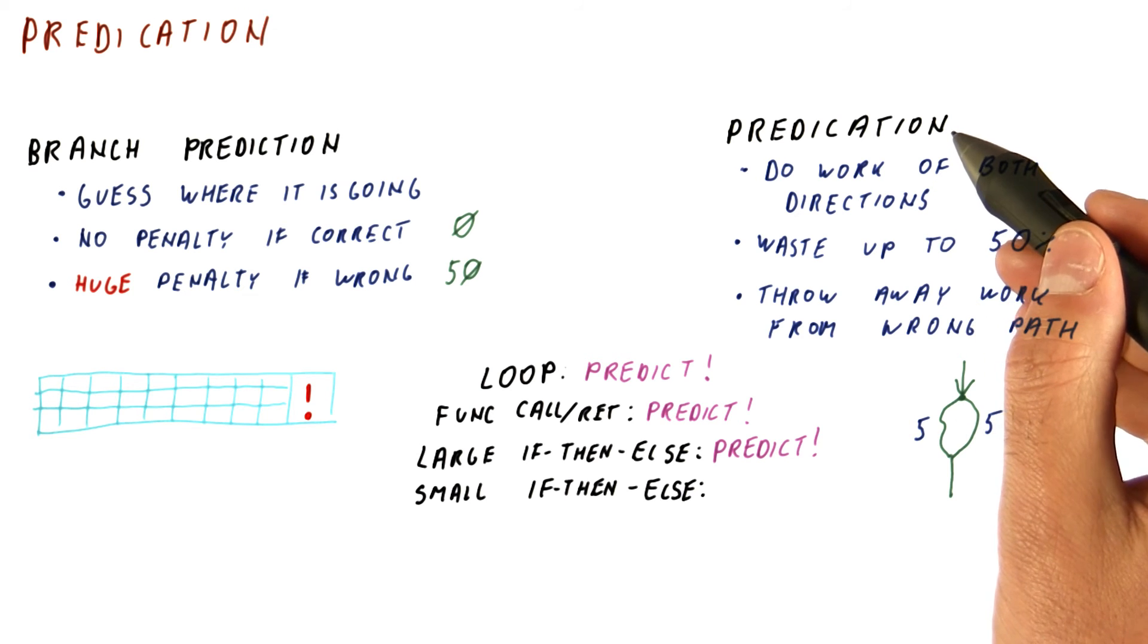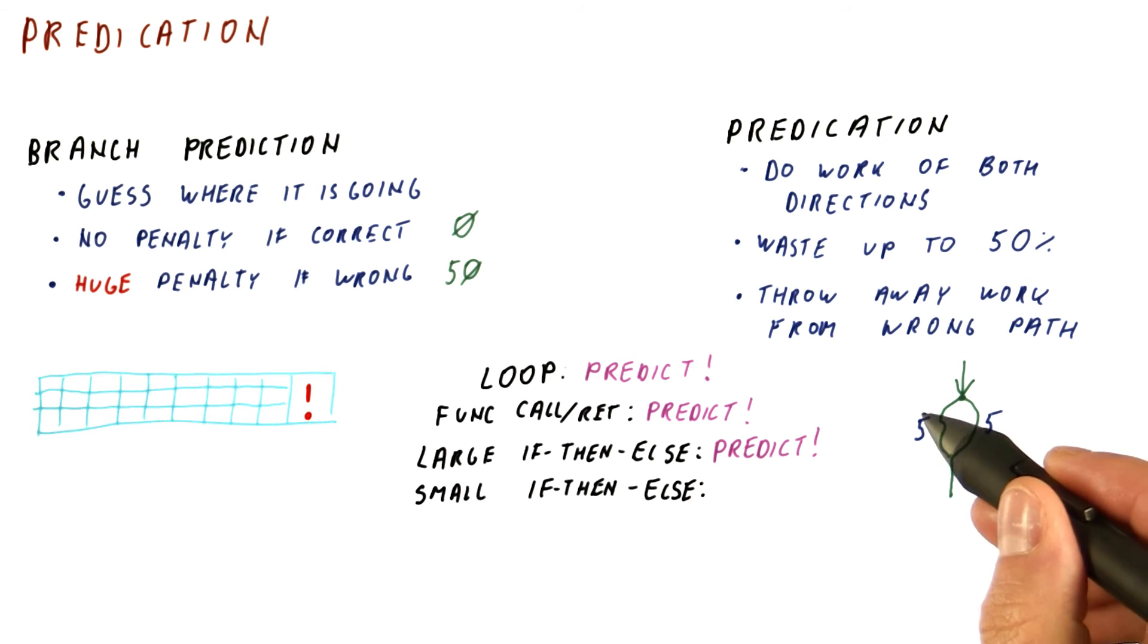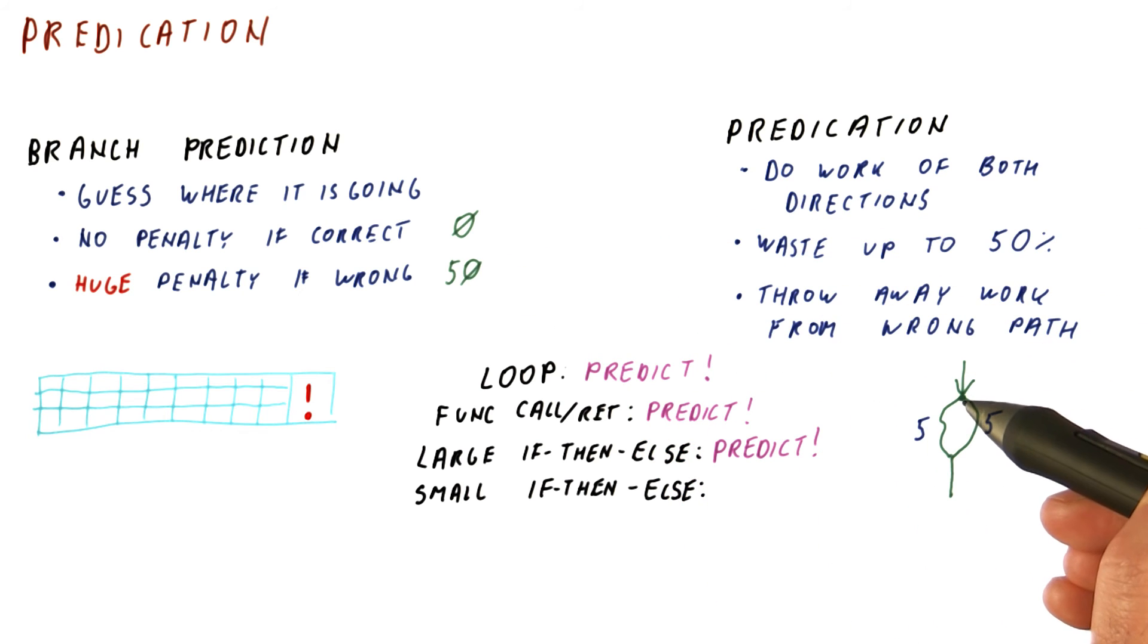If we do predication, we will be executing 10 instructions here, followed by instructions that we will do anyway. So the waste is five instructions either way. Here, we are predicting, and if we are right, we waste nothing. But if we are wrong, we waste 50 instructions.